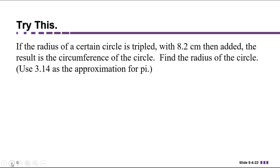So the first thing that we're going to do here is we're going to draw ourselves a circle with a circumference C. And it tells us some information about its radius. If the radius of a certain circle is tripled with 8.2 centimeters then added, so if we triple the radius and add 8.2, that's what this is telling us right here.